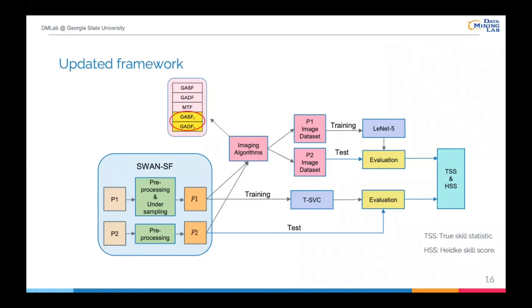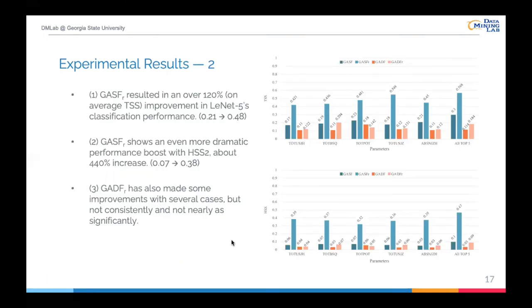We applied this idea into the original GASF and GADF to obtain the modified GASF and the modified GADF. Next, we add these two new imaging algorithms into the mentioned framework and evaluate them again. From the new experimental results, we can see the modified GASF gained a huge improvement compared to the original GASF. And the GASF-R even has a more dramatic performance boost with HSS. It can reach 0.38. That is better than the SVM-based algorithm. If you remember, the HSS of TSVC is barely 0.3. Moreover, the modified GADF has also made some improvements in several cases, but not consistently and not significantly.